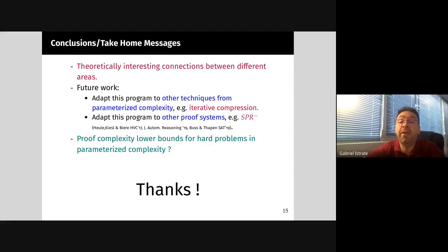To conclude, I hope I've shown you that there are theoretically interesting connections between all these different areas and that one can apply techniques from kernelization to problems in proof complexity. There are other directions that are extremely interesting and we're interested in exploring them. For instance, we've connected parameterized complexity to kernelization and proof complexity to kernelization. But there are other techniques in this area such as iterative compression or color coding that may be useful for obtaining efficient propositional proofs, and we'd like to do that.